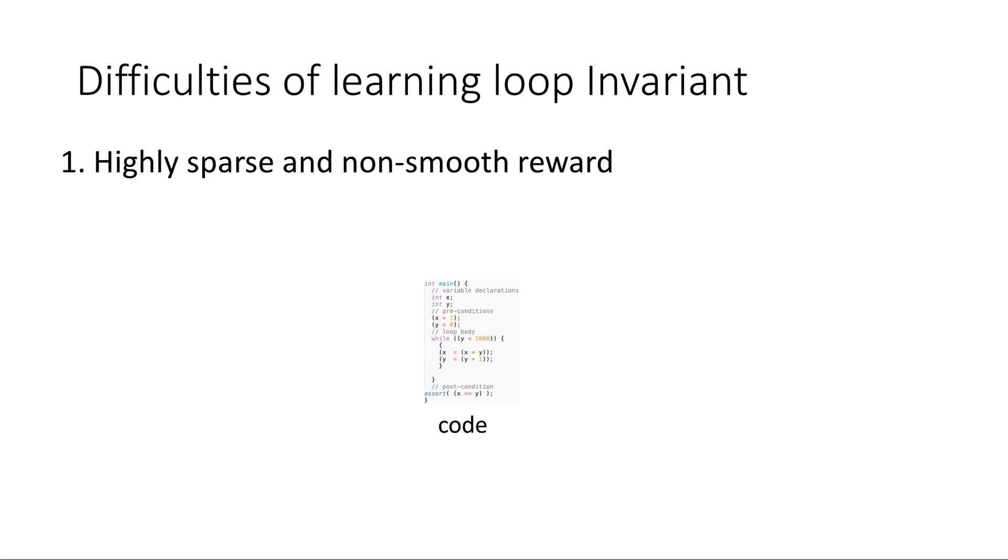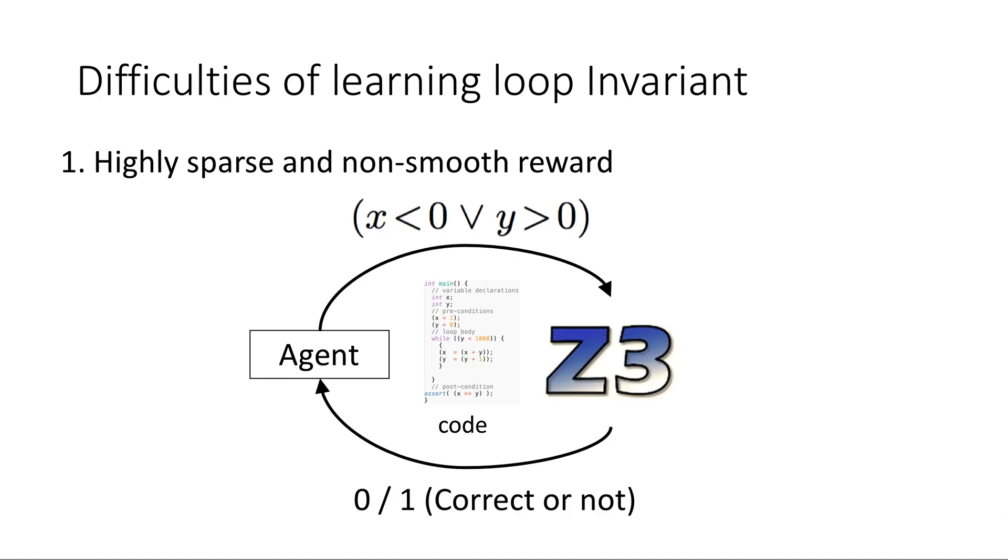So it is natural to formulate it as a bandit problem. The agent keeps proposing loop invariants, and the checker tells whether the proposed one is correct or not.